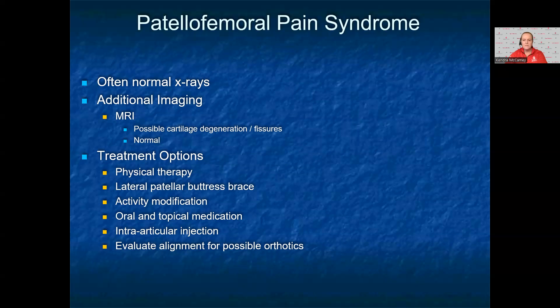For patellofemoral pain syndrome, many times the x-ray will be normal. An MRI is usually not needed, as the clinical history and x-rays will give you the diagnosis. If you would get an MRI, you may see cartilage degeneration or defects on the posterior surface of the patella, but many times the MRI is normal also. Treatment options include physical therapy, knee bracing, activity modification, oral and topical medications, intra-articular injection therapy, and possibly orthotics or footwear changes.